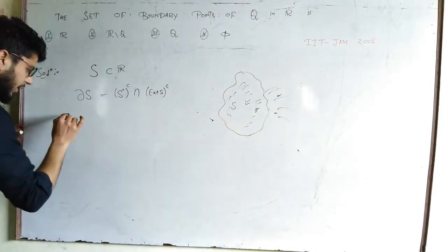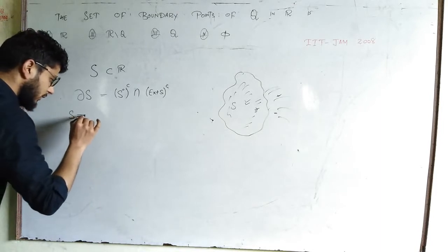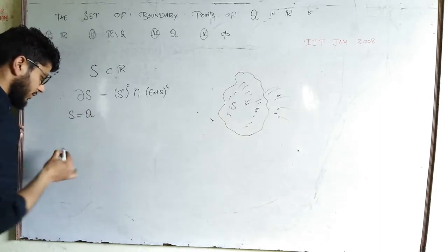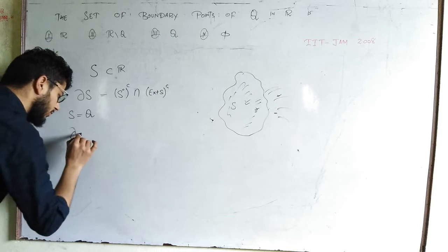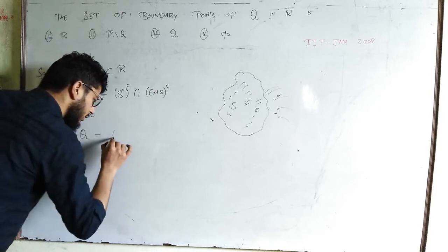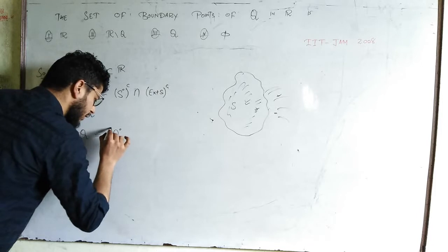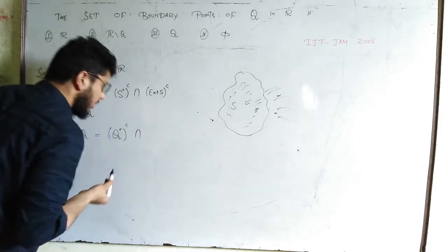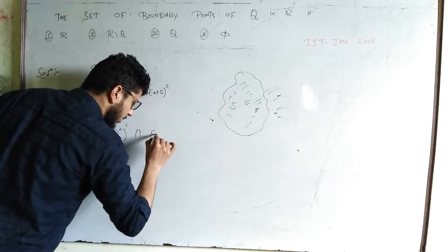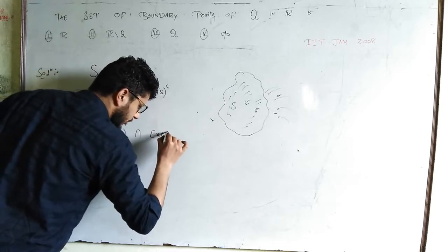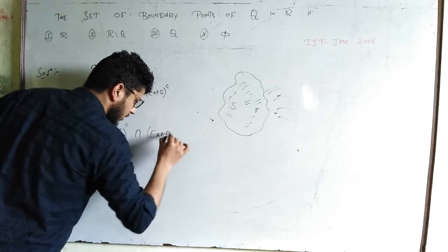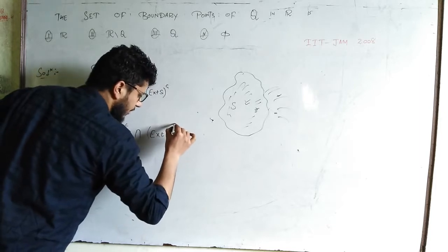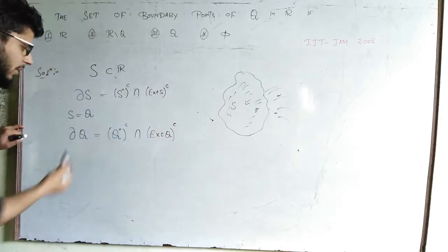So that's what we have done here. Now our set here is S, the set of rationals. So the boundary points of set of rationals is, you will just find the interior points and then take the complement, and then you will take the intersection with exterior points of Q and then you will take the complement of this.